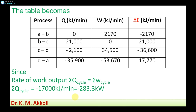We have now determined all unknown values for each of the four processes by applying the first law of thermodynamics separately for each process, using the total sum of heat transfers and the cyclic integral of internal energy. The table has been completed with all values for heat transfer, internal energy change, and work transfer for processes A-B, B-C, C-D, and D-A.